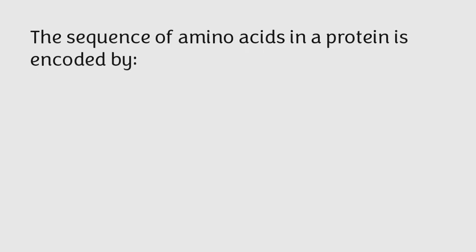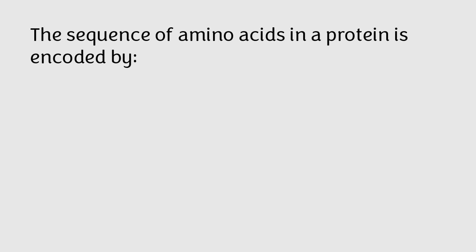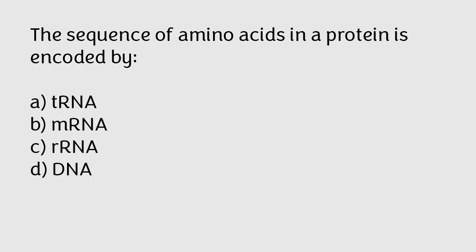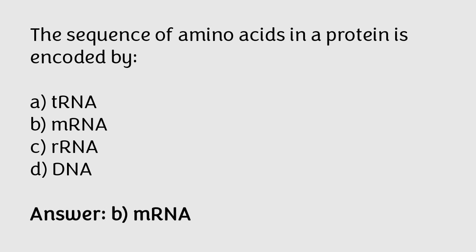The sequence of amino acids in a protein is encoded by: tRNA, mRNA, rRNA, DNA. The correct answer is option B. The sequence of amino acids in a protein is encoded by mRNA.